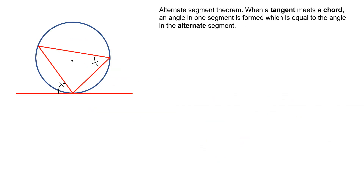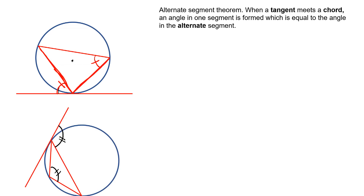Finally — this is only if you're sitting the higher tier exam — when a tangent meets a chord, an angle in one segment is made, and that's equal to the angle in the alternate segment. Here's another picture which is quite useful: you've got a tangent meeting a chord, forming an angle here, which is equal to the angle in the alternate segment.